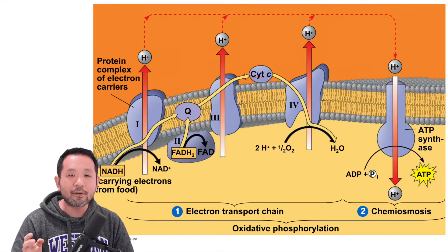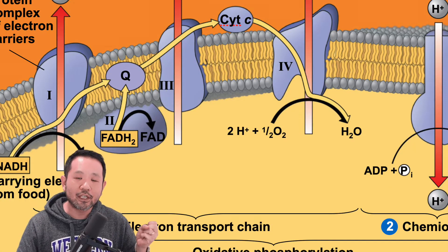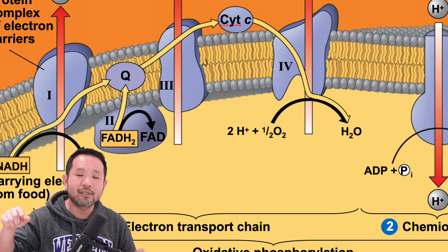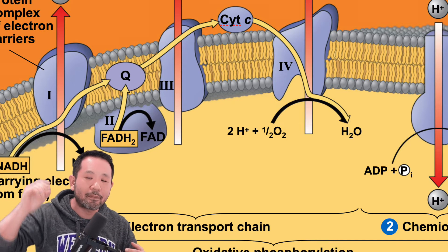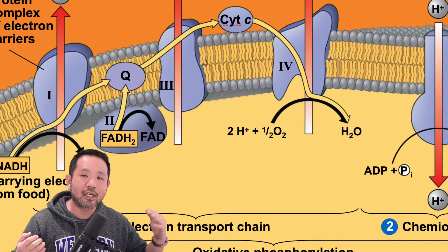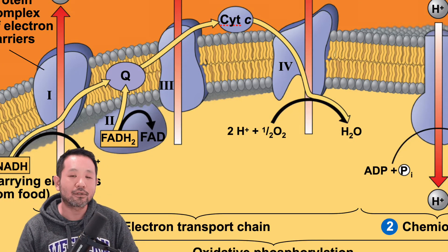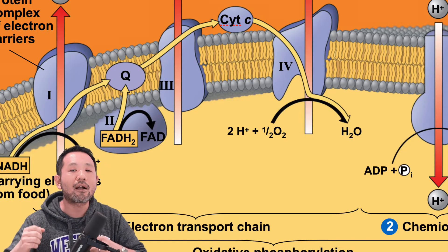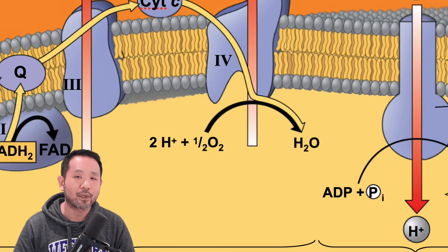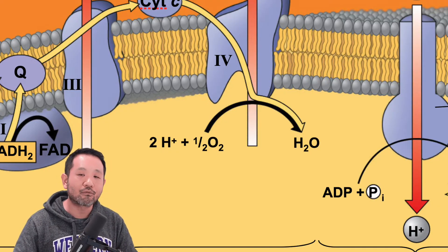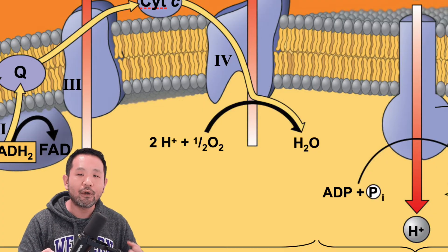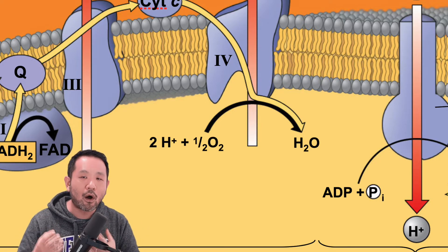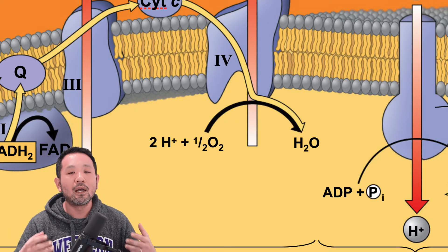There's one last thing to talk about: these electrons are going in a linear way, being dropped off at protein complex one or two and going through the protein complexes, ultimately ending up at protein complex four. Much like a cup that cannot be filled past its brim, we have to remove these electrons so that new electrons can come in at protein complex one and two. The removal of these electrons is where oxygen comes into play, which is why this is called oxidative phosphorylation. In biology, we refer to oxygen as the final electron acceptor, because at the very end of the ETC, oxygen takes those electrons and combining with two H+ ions, creates a water molecule.